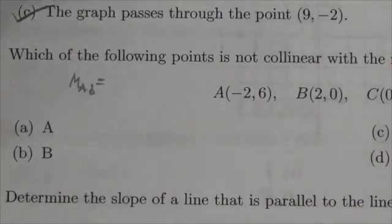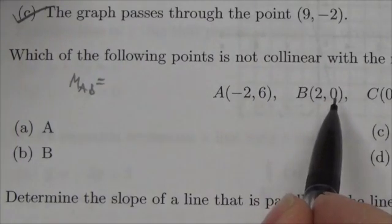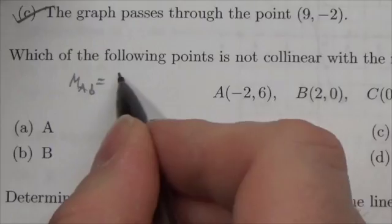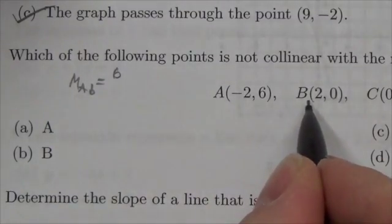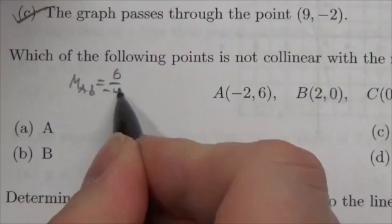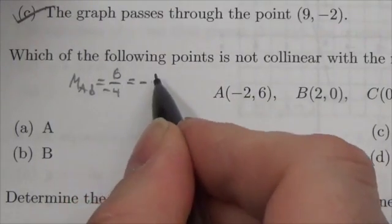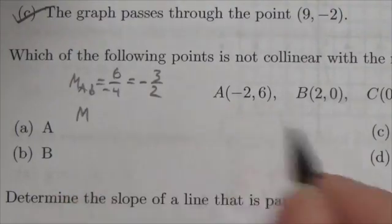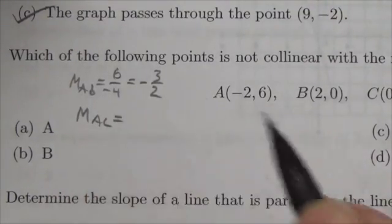We're gonna use this as our second point. Six minus zero is six, negative two minus two is negative four, so this is gonna end up being negative three over two. So that's the slope of AB.